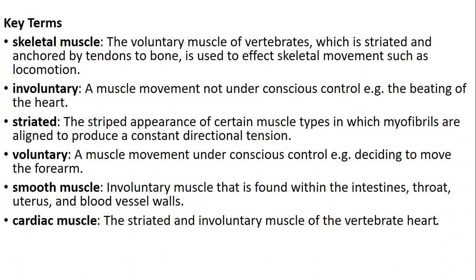Involuntary muscles are those that work without conscious thought, like the heartbeat and breathing—you cannot stop them. These muscles have striations. Striated means the striped appearance of certain muscle types in which myofibrils are aligned to produce a constant directional tension. When you look at these muscle types, they appear to have stripes, which are referred to as striations. Voluntary muscle movement is under conscious control.